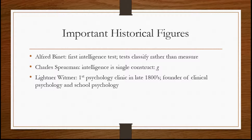Charles Spearman was another early test designer. He came up with the idea that intelligence is a single construct, which he called G. Of course, this idea has been largely discredited now. Most psychologists understand intelligence as composed of many different factors and variables, not a single construct.